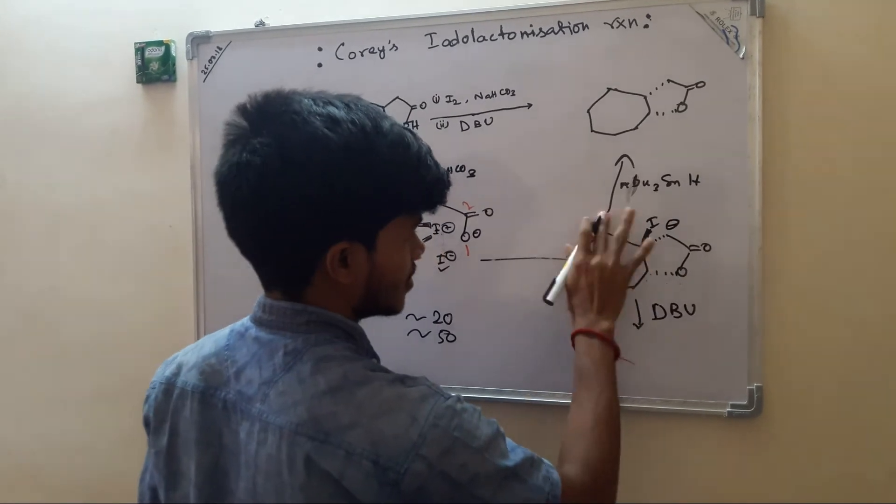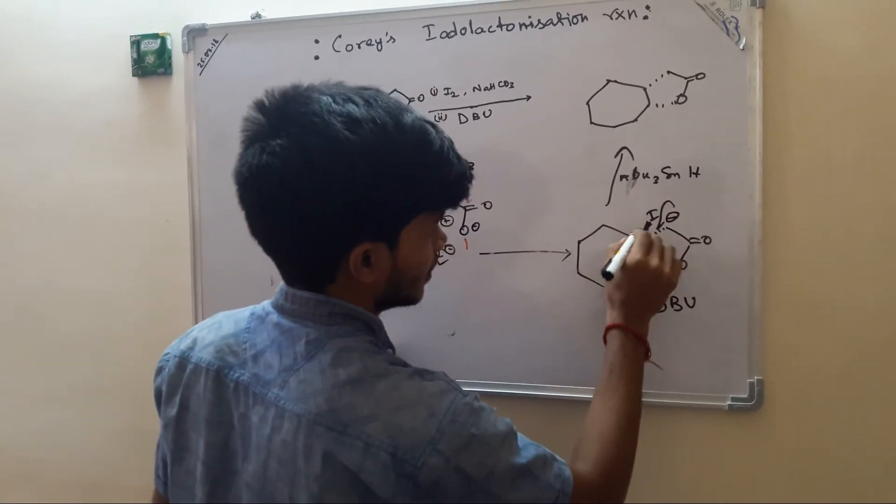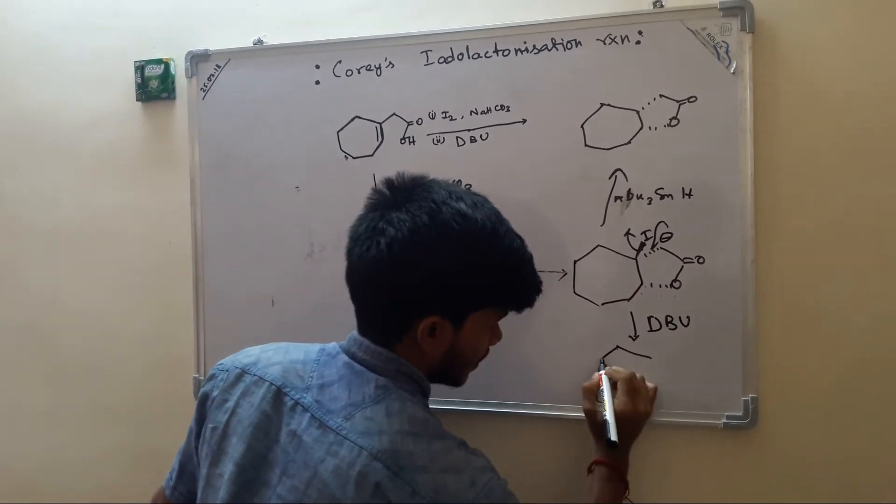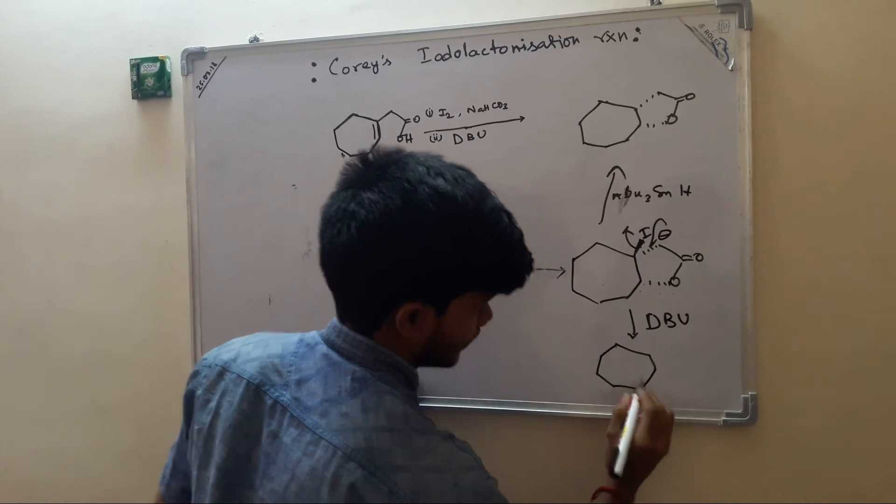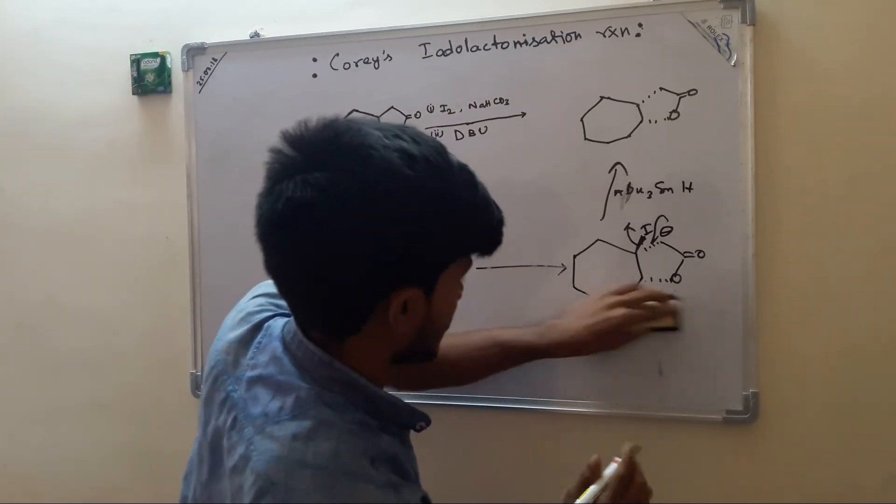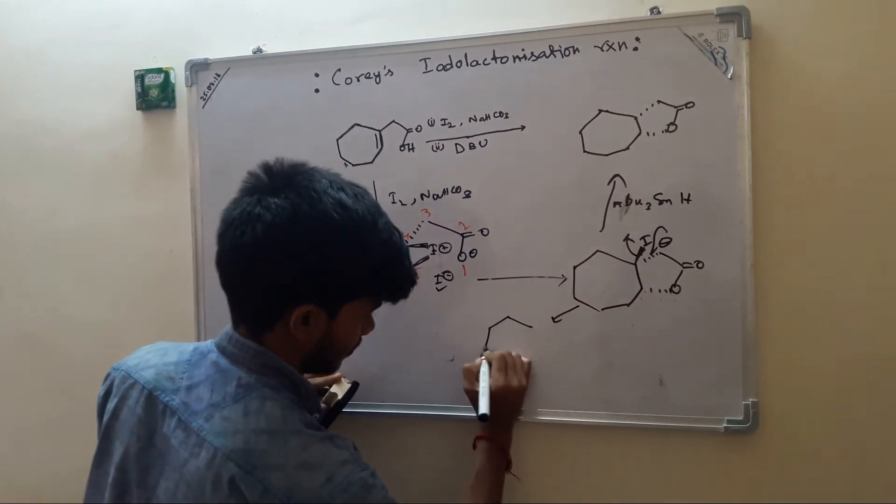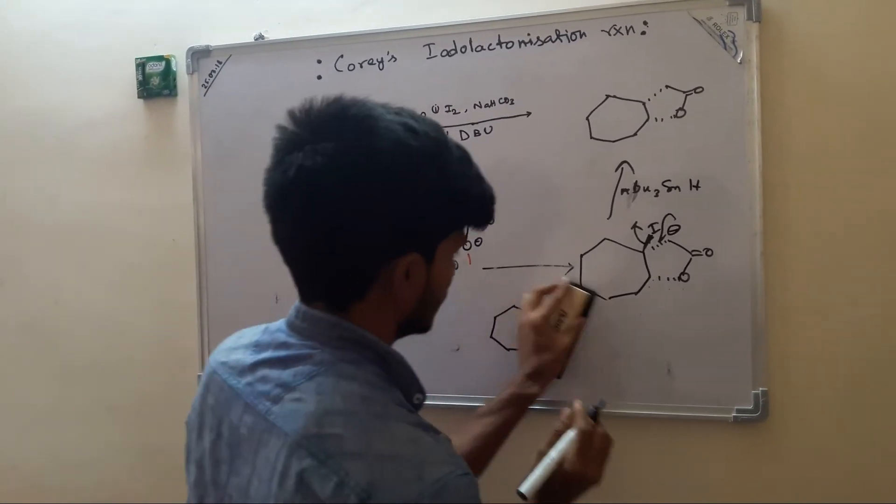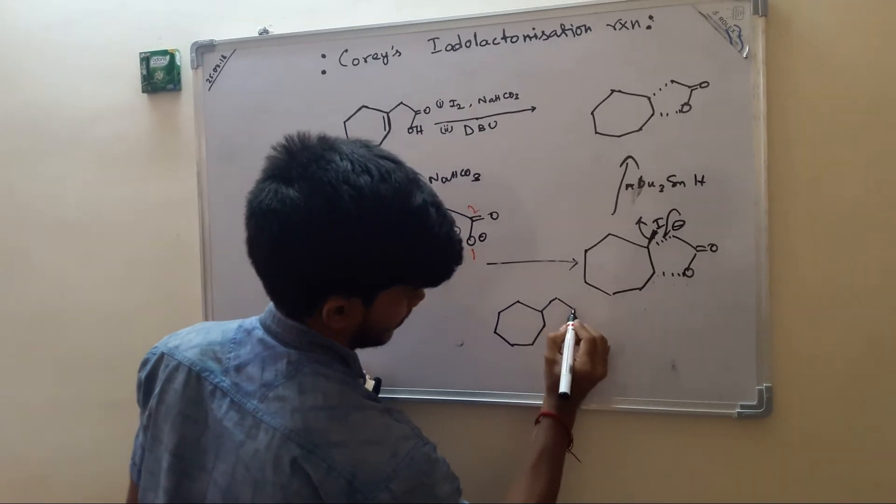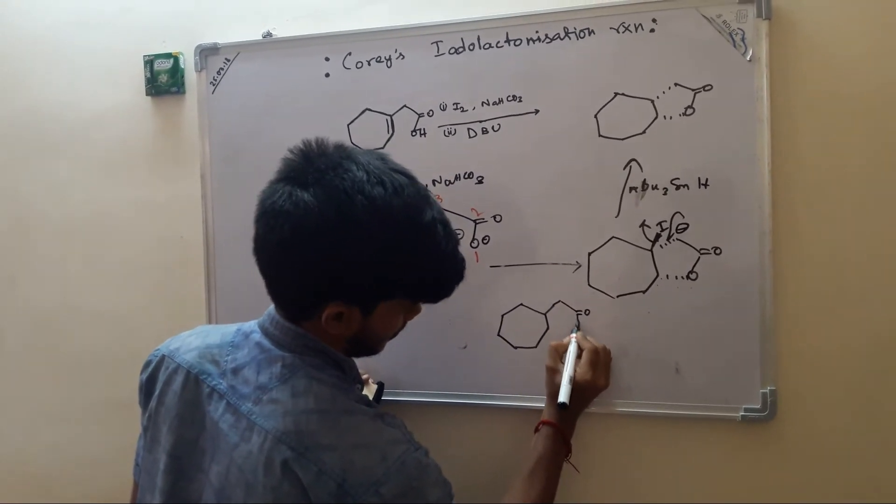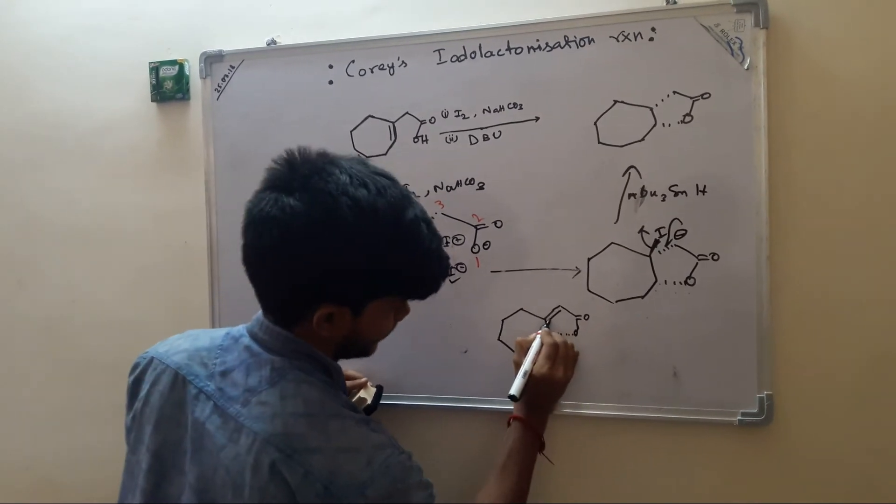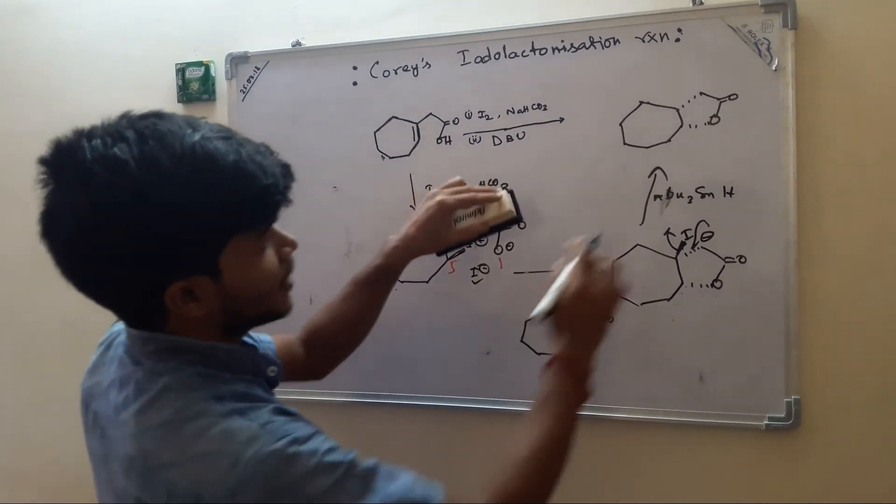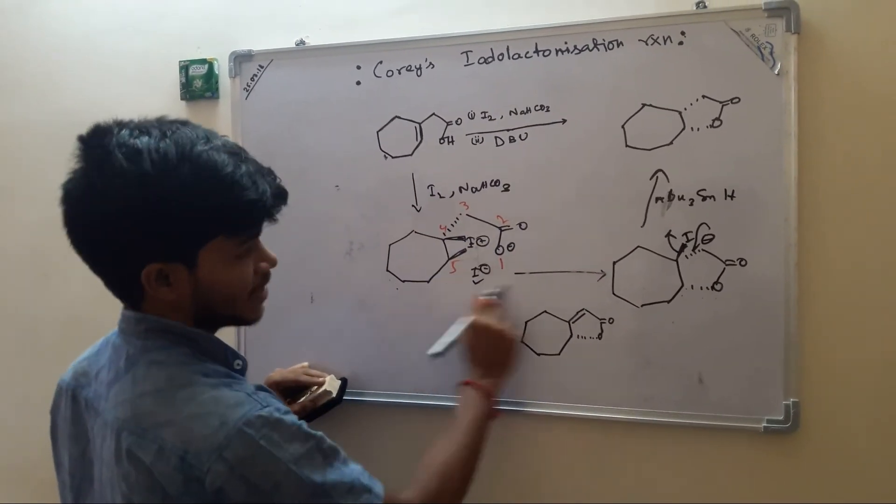So hydrogen will abstract from this position. Here will be minus. Then it will attack. Hydrogen iodide minus would leave. Then the product should be this. There should always be five-membered ring formation in this step.